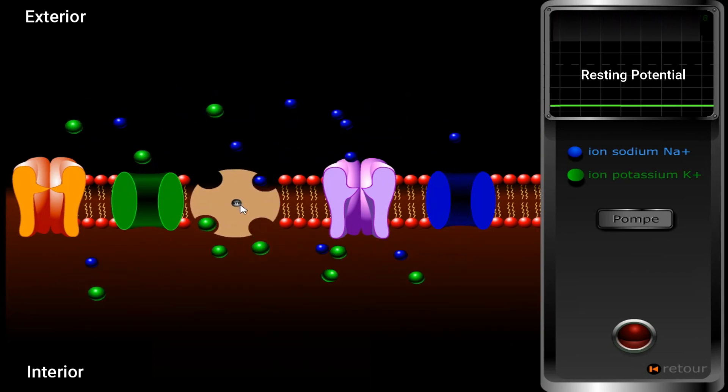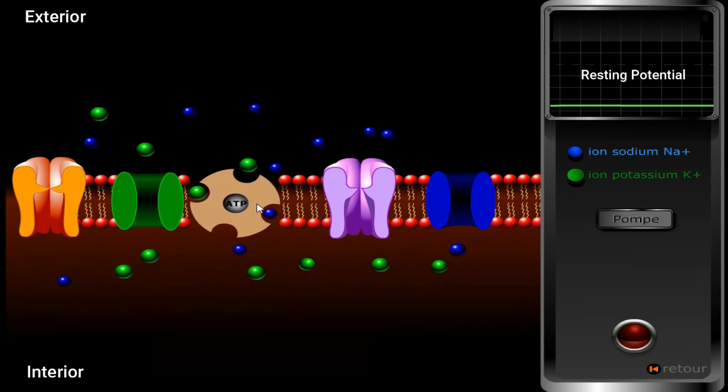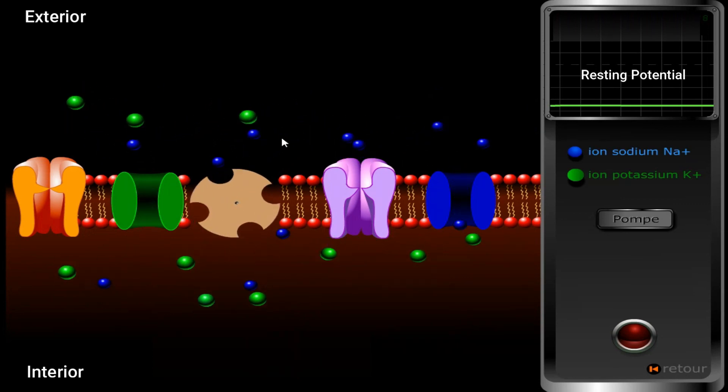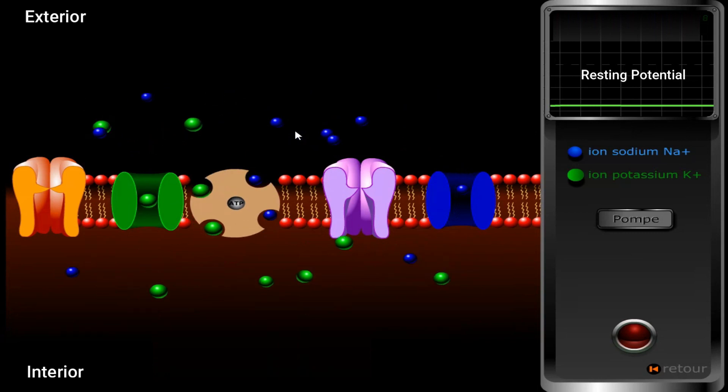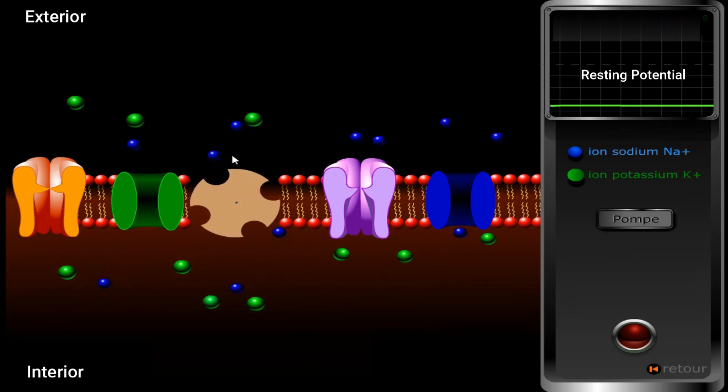As you see, the Na+ ions are exported outside, while the K+ ions are exported to inside.